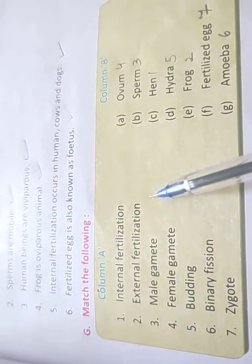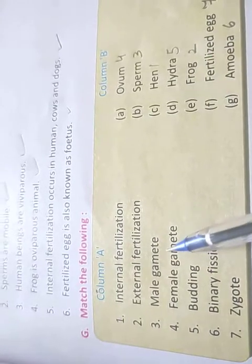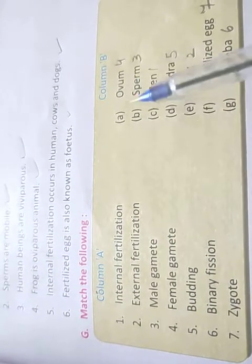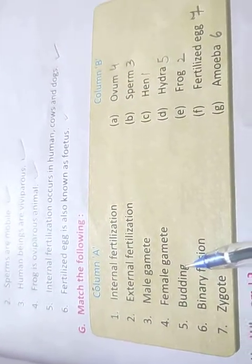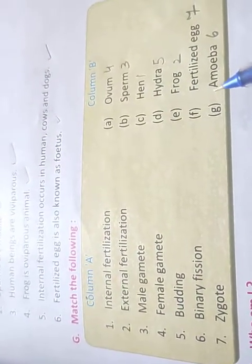Internal fertilization - aapka internal fertilization kaha hota hai? Murgi mein, number one hen. External fertilization kaha hota hai? Frog mein. Male gamete kaun sa hota hai? Sperm. Female gamete - ovum. Budding kis mein hoti hai? Hydra ke andar. Binary fission kis mein hota hai? Amoeba mein. Zygote - fertilized egg.